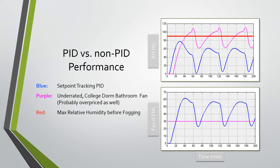This explains the performance of our controlled system versus an underrated college dorm bathroom fan. In all the bathrooms we've been in throughout our college career, the fans have been really small and wimpy, so we modeled it as a 30 cubic feet per minute fan. On these two plots, the purple line represents the college bathroom fan staying on all the time. In the top plot, the relative humidity — anything above 90% would fog the mirror because the mirror is a little bit colder than the rest of the room, so anything above the red line is fogged. When we implemented our setpoint tracking PID controller, it was able to maintain relative humidity under that threshold, so our bathroom mirror didn't fog.